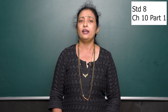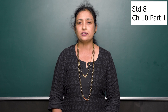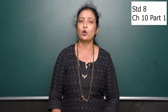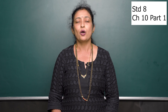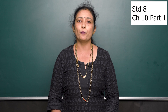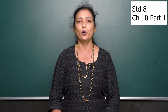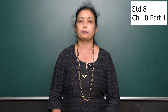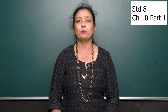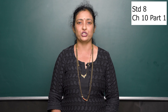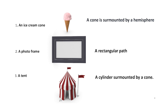In our real life situations, we come across many objects which are a combination of two or more shapes. These objects are called nested objects. For example, an ice cream cone. An ice cream cone is a cone surmounted with a hemisphere.